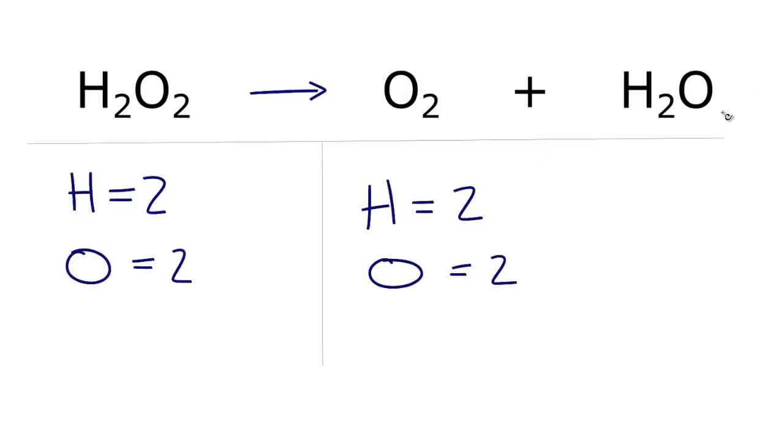If there's nothing written, it means there's a one there, that's implied. So we have the two plus the one, and that gives us three oxygens on the product side.